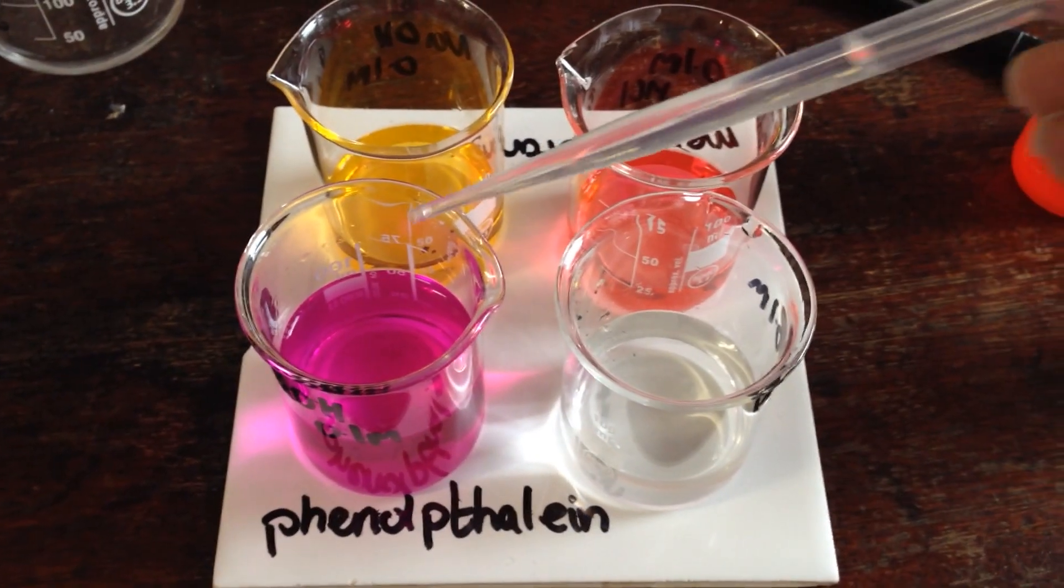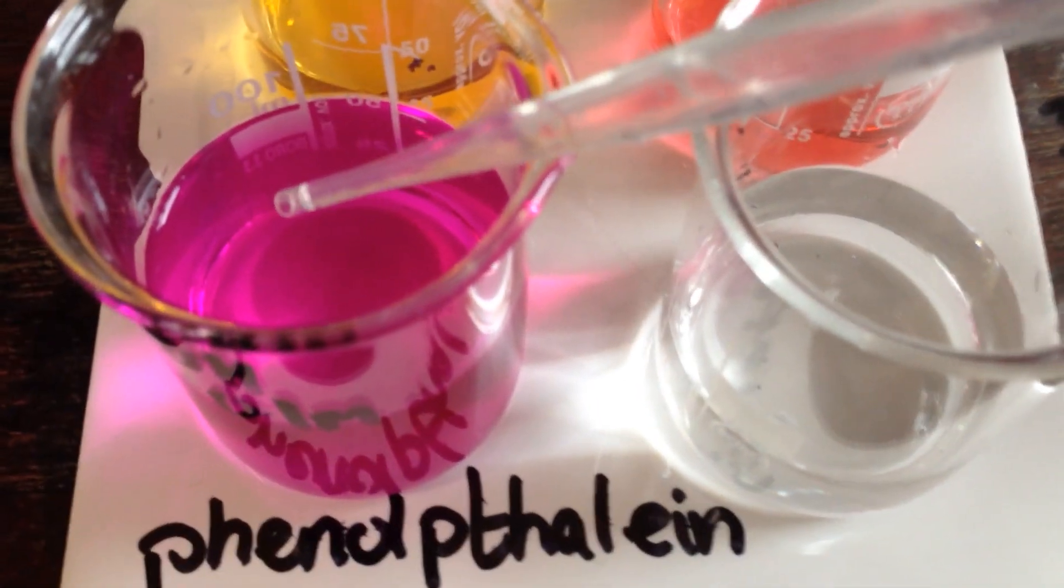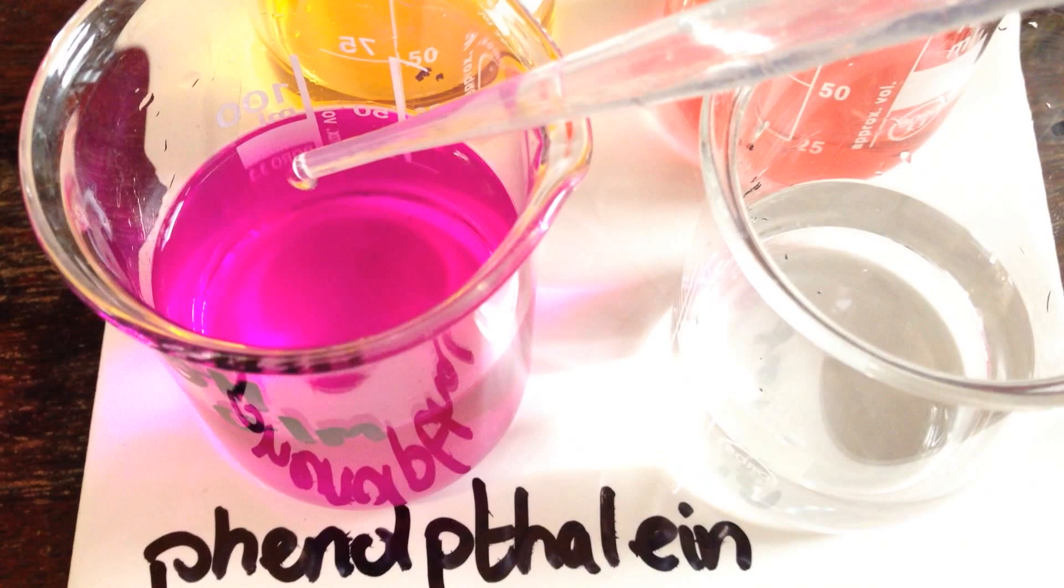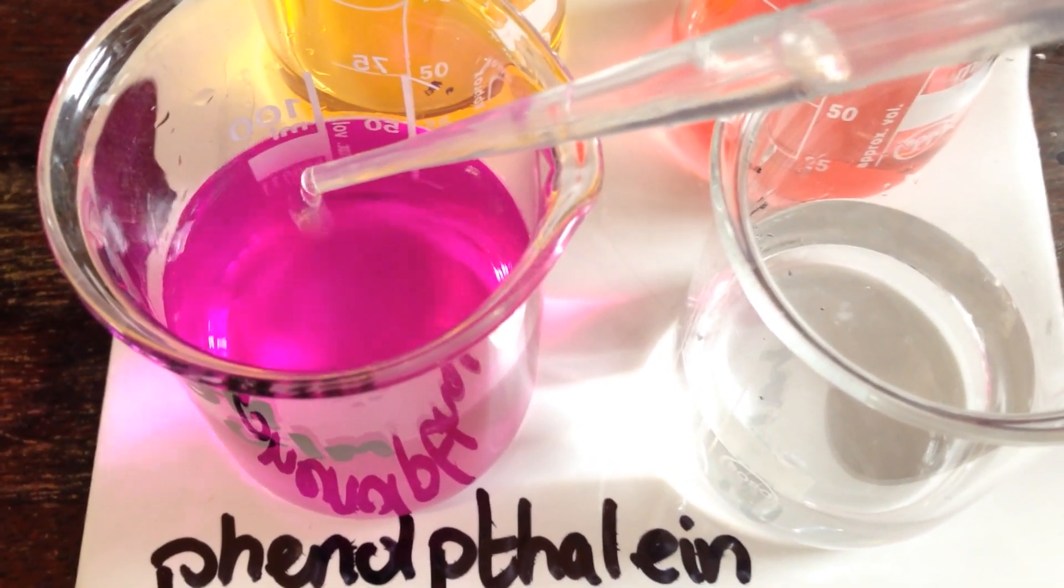When looking for color changes, you need to go drop by drop. Going a bit closer, you'll start to see that when acid is added to the alkaline, we're getting a little bit of a change in color.